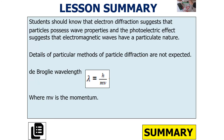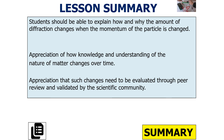What should we know from today's lesson? Electron diffraction suggests that particles possess wave properties, and the photoelectric effect suggests that electromagnetic waves have a particulate nature. The de Broglie wavelength is equal to h over mv, where mv is the momentum. You should be able to explain how and why the amount of diffraction changes when the momentum of a particle changes, and have an appreciation of how knowledge and understanding on the nature of matter has changed over time, with such changes evaluated through peer review and validated by the scientific community.